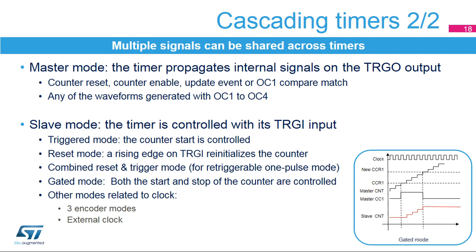A combined mode including reset and trigger can be used for re-triggerable one-pulse mode generation. In gated mode, the counter is active only while the level on the input signal is high, with this signal coming either from an input or from another timer in waveform generation mode. Lastly, the slave mode selection also includes clock-related modes such as quadrature encoder decoding or external clocking modes.